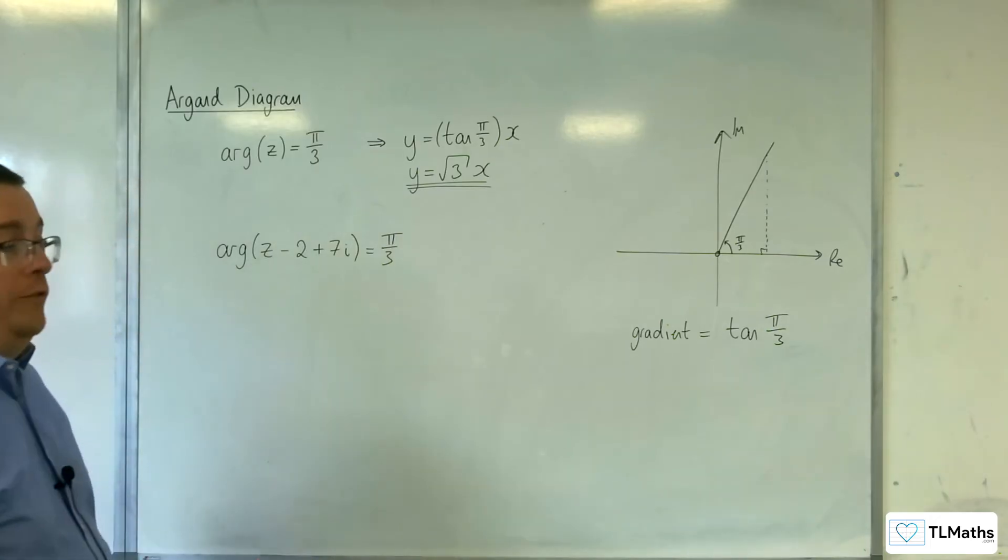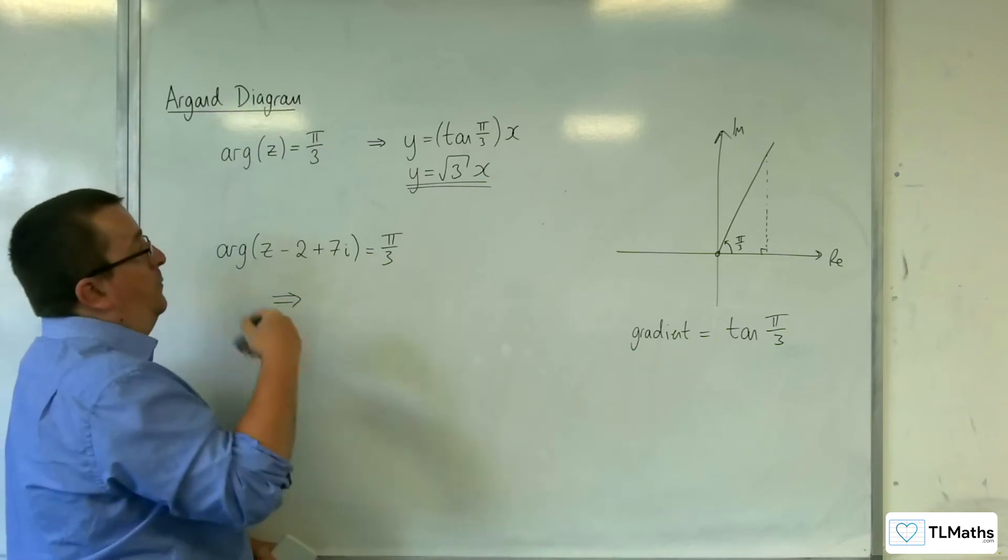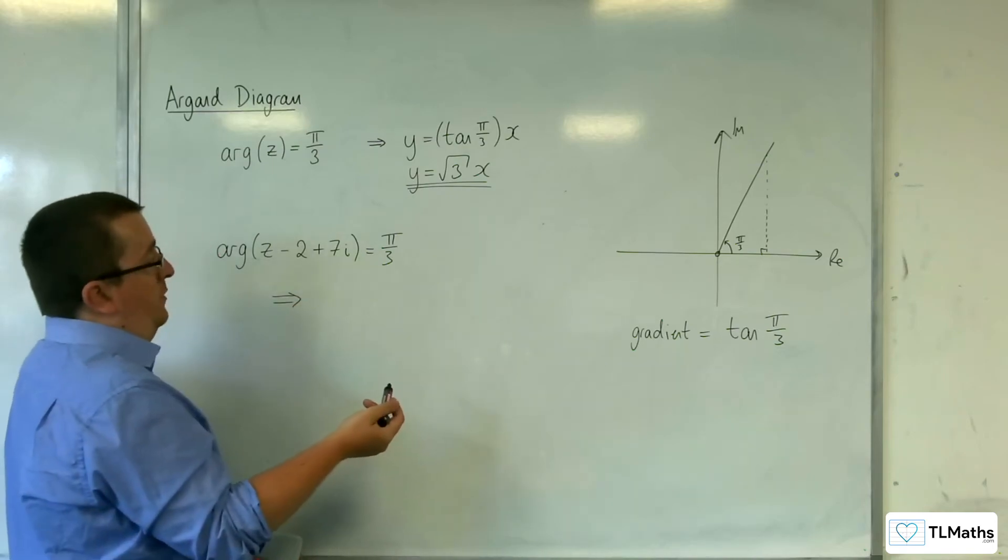what's the Cartesian form for that? Well, what you now understand is, I know that the gradient is going to be √3,